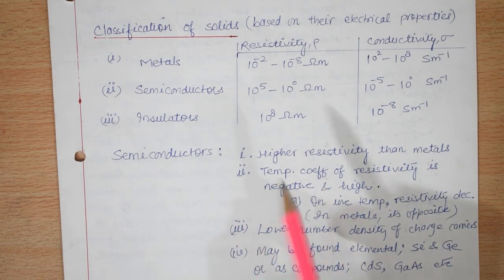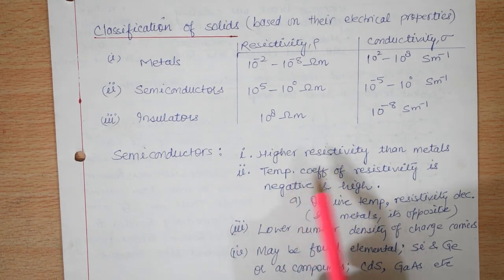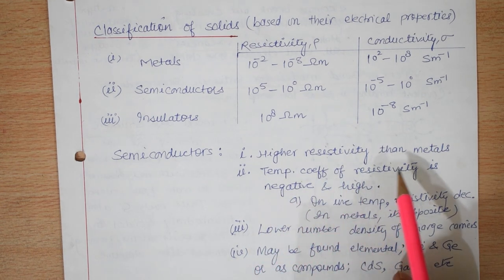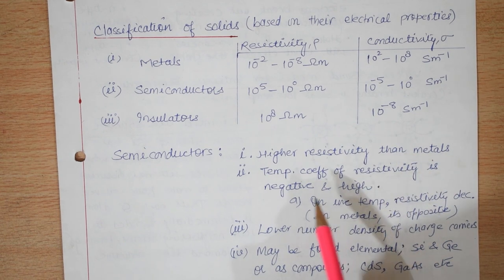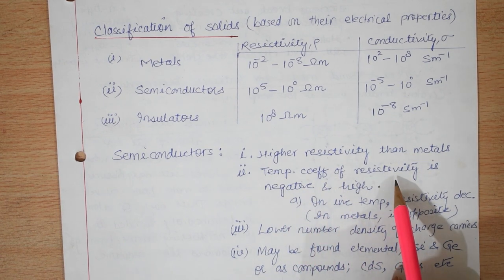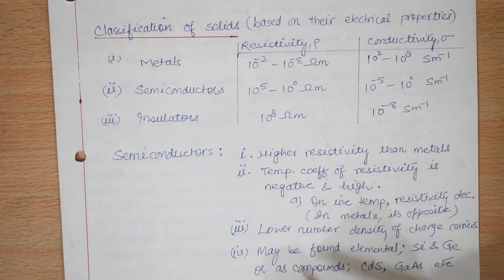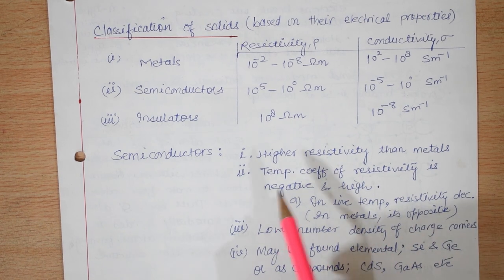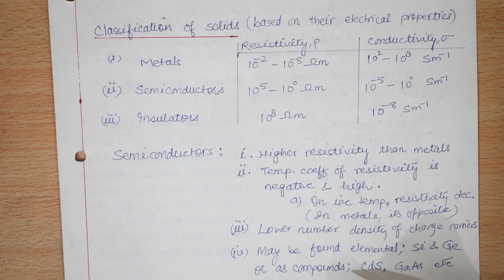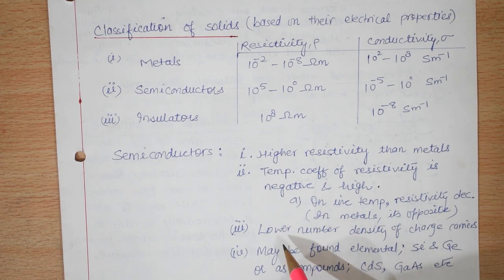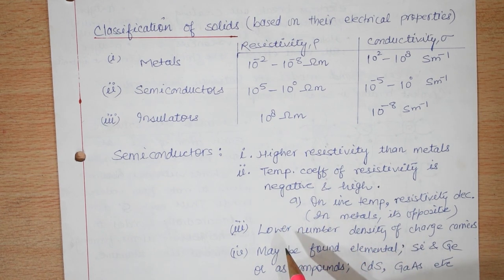Some features of semiconductors: their resistivity is higher than that of metals but less than that of insulators. The temperature coefficient of resistivity is negative for semiconductors — on increasing temperature, the resistivity decreases. This is the reverse of metals, where increasing temperature causes resistivity to increase. Furthermore, the density of charge carriers is quite low compared to metals in semiconductors.